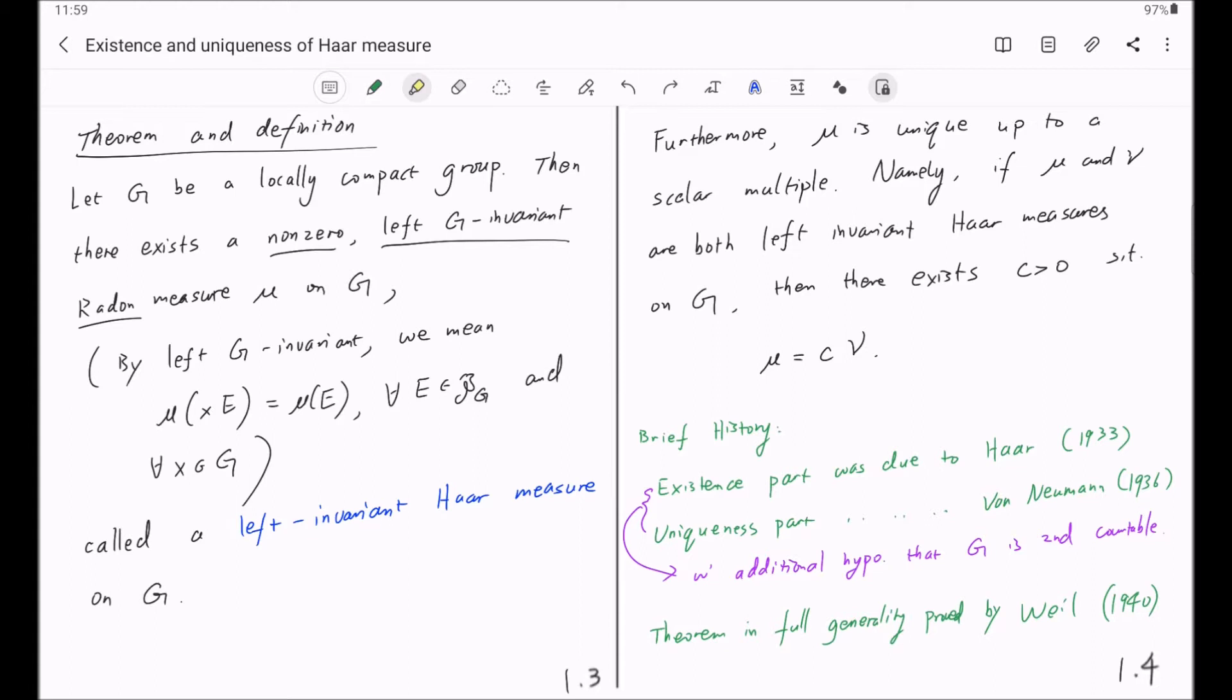Now we are going to start the proof of the existence of Haar measures. The first thing we will do is introduce the original intuitive idea of the proof due to Haar. This actually provided the motivation for Weil's proof in full generality.